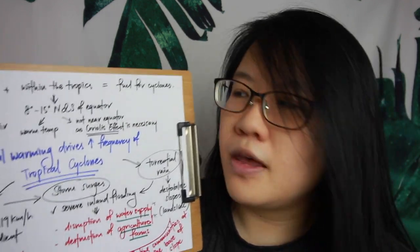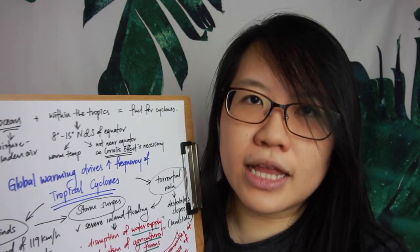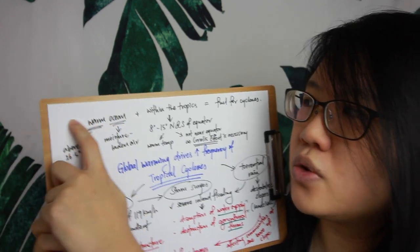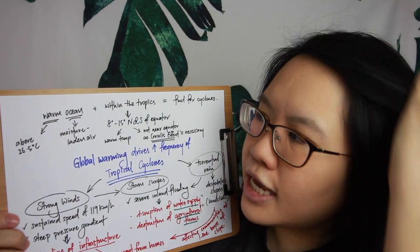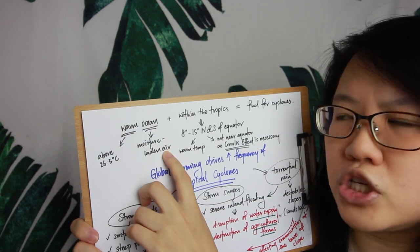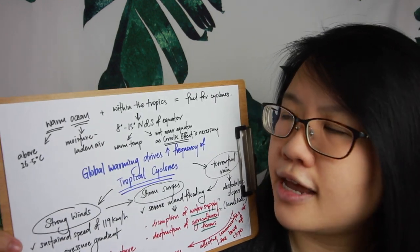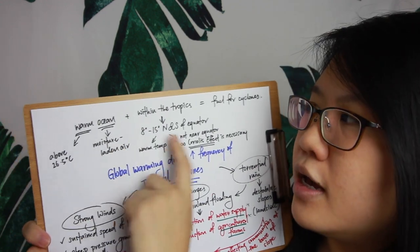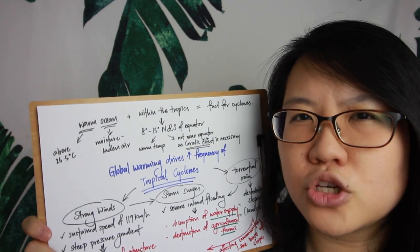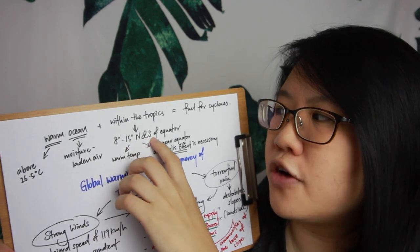Before going in depth, we first need to understand the characteristics of tropical cyclones and the essential components that create them. First, you need warm ocean waters — the ideal temperature is above 26.5 degrees Celsius. Next, you need moisture-laden air, which is why tropical cyclones can bring torrential rain. The ideal latitude of origin is 8 to 15 degrees north and south of the equator.